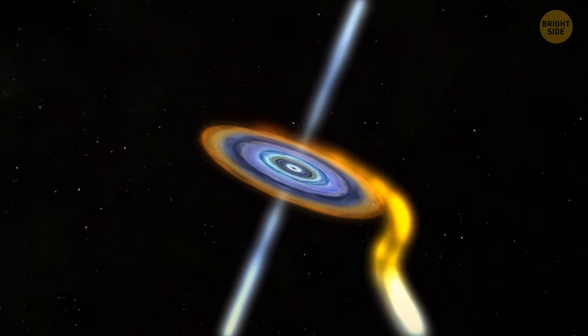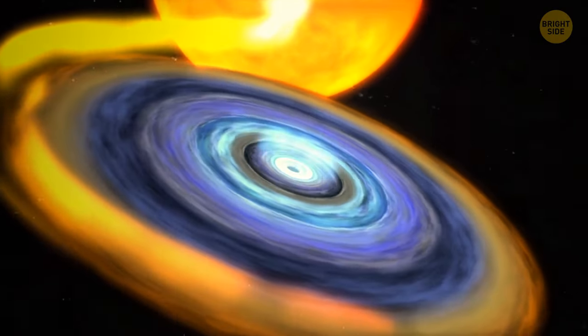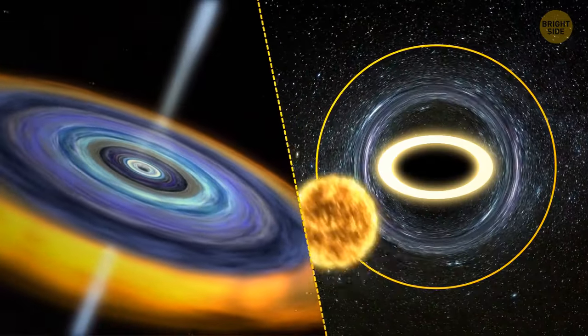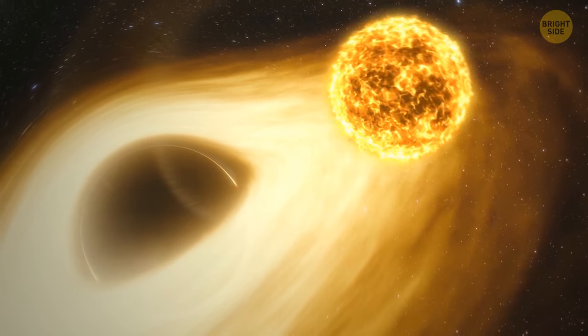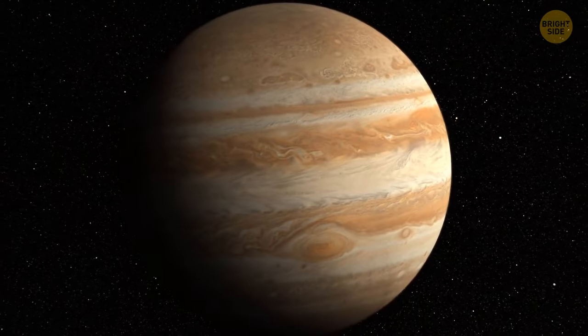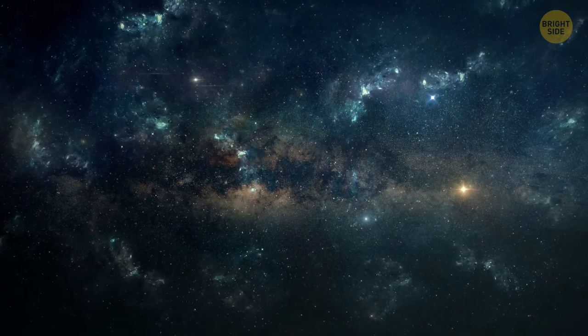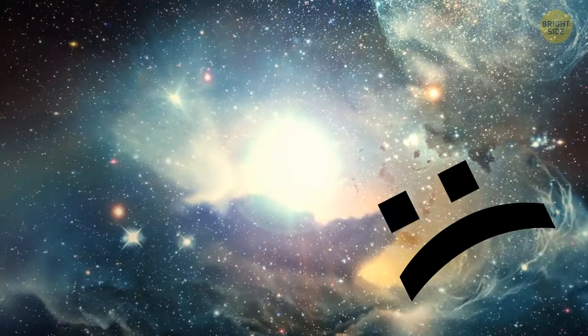As the black hole keeps snacking on it, the star keeps losing its mass and growing in size. Its own orbit is becoming more and more circular. Scientists believe, one day, it will be able to spiral away from its mean friend and turn into a planet the size of Jupiter in a trillion years. That's 70 times longer than the universe has existed so far, so it might not ever happen.